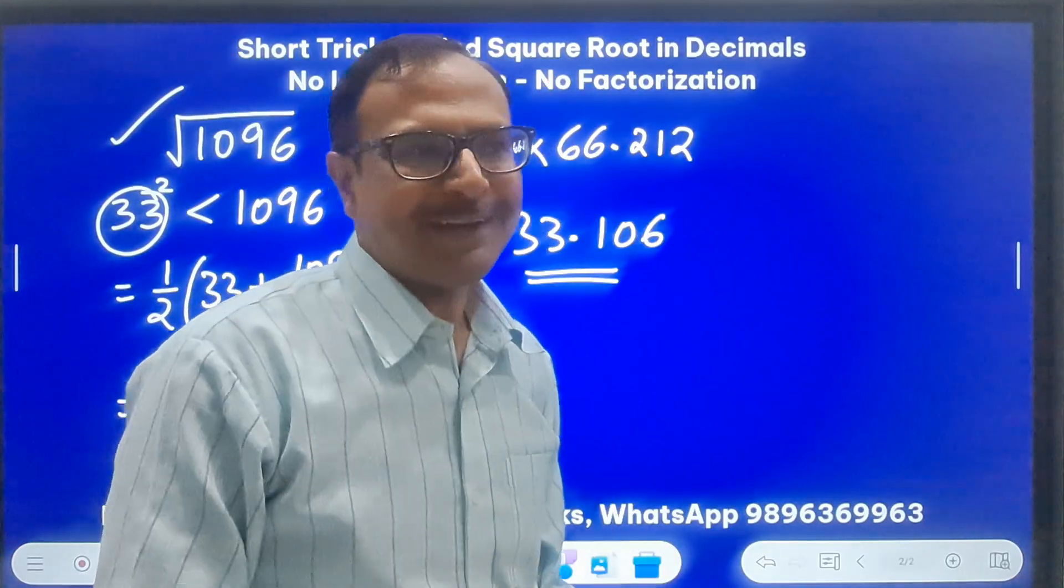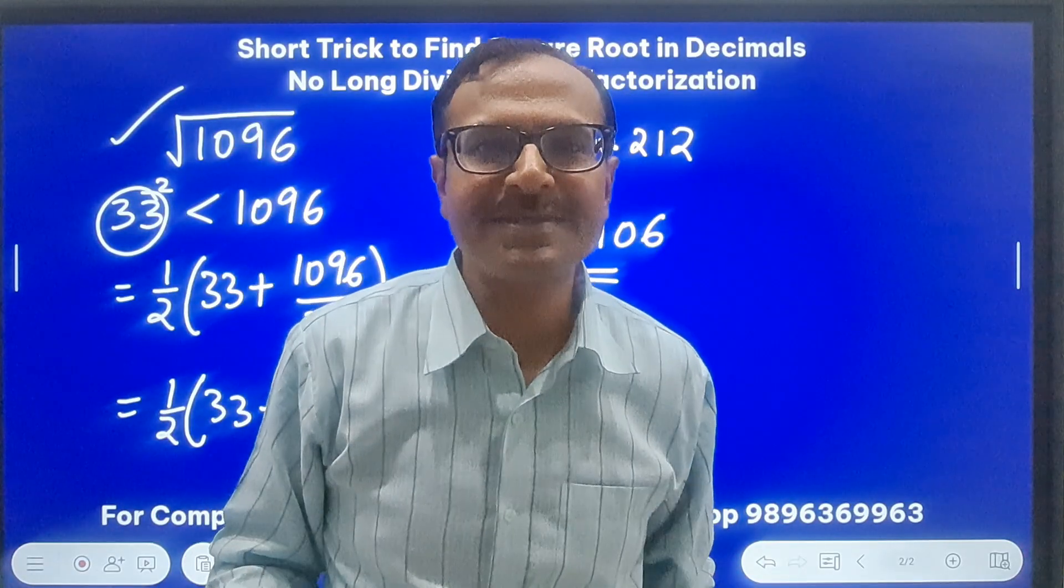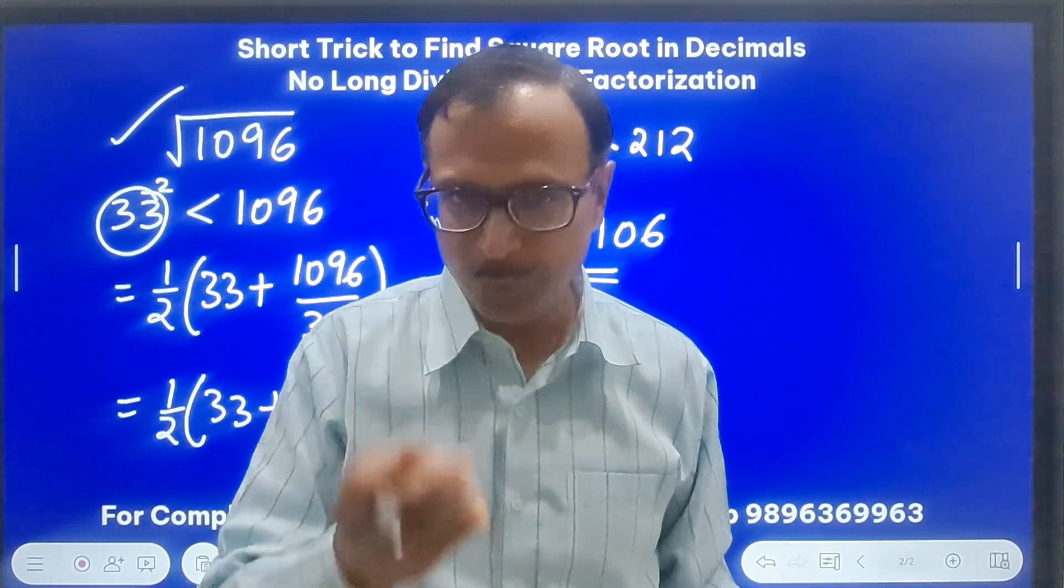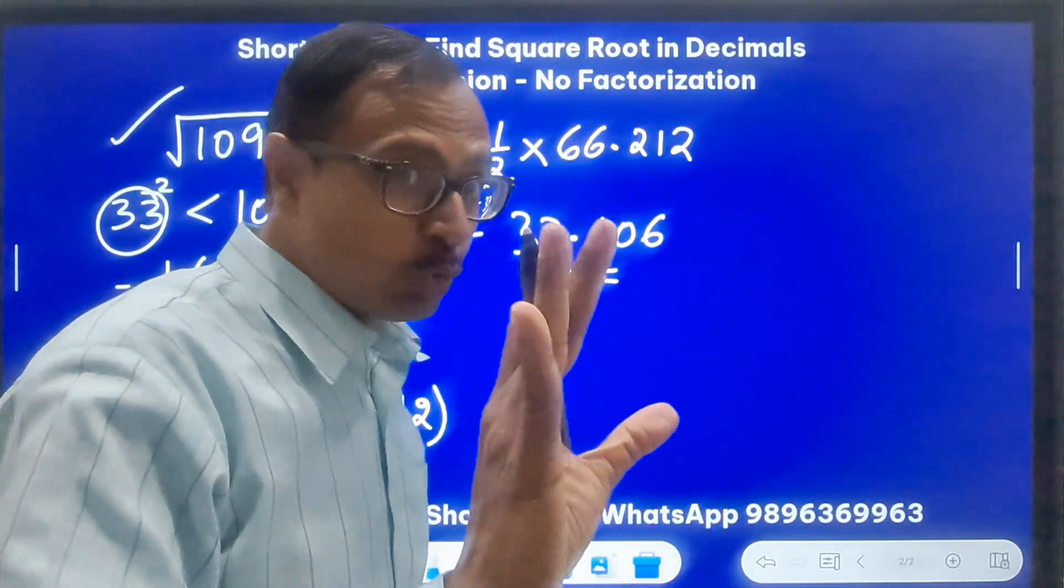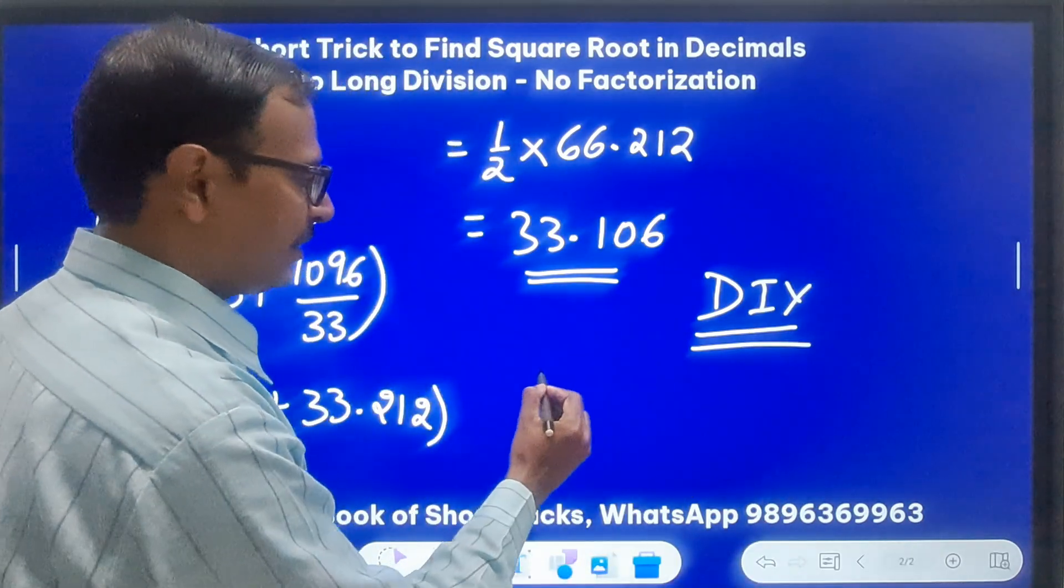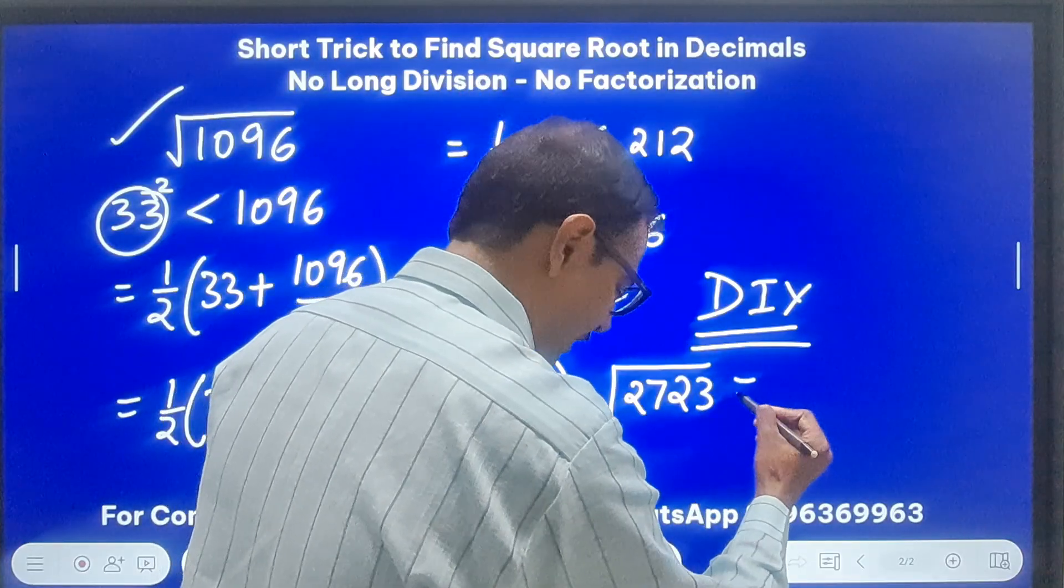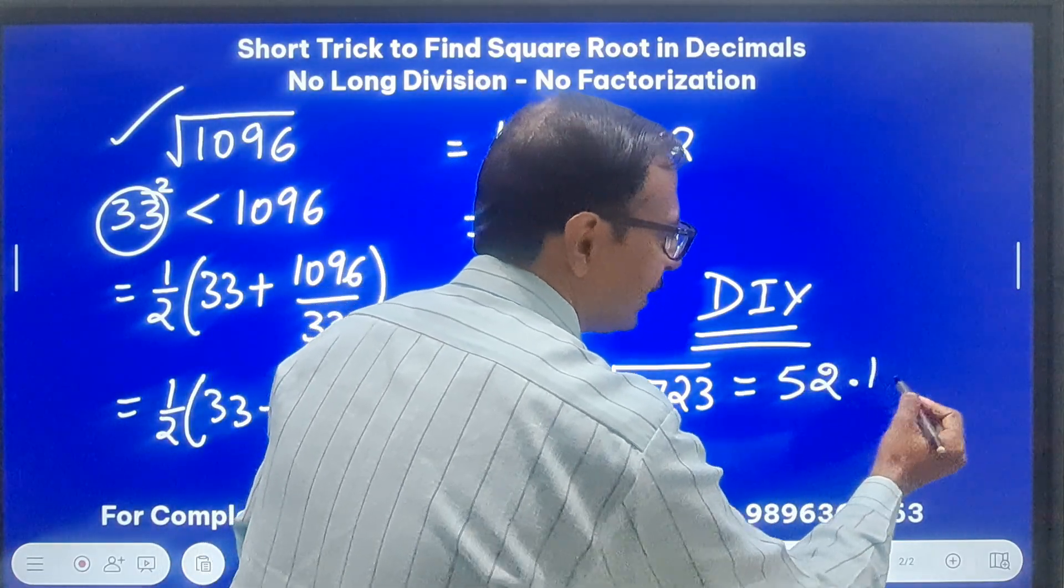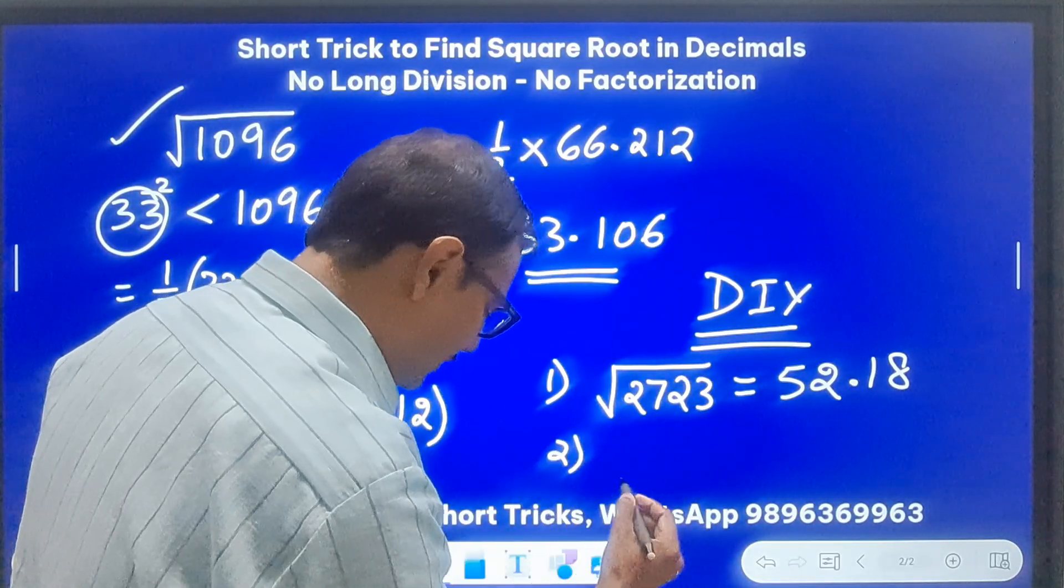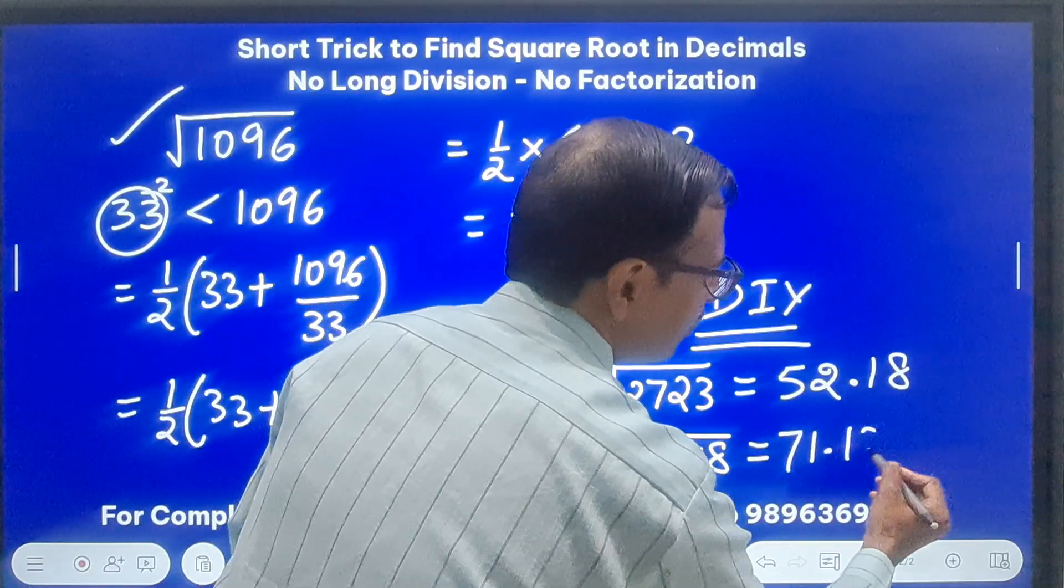So I can go on and on, I can show you any number of examples, but unless and until you put in the practice hours, this is not going to work that easy. Looks very easy when somebody else is doing it. So you do it and let me know in the comments here. And I'll give you two questions. This is DIY, do it yourself. Try the first question which is square root of 2723, and you should get your approximate answer as 52.18. So I already told you the value of A, small value, 52. And one more, just try doing square root of 5058 and try to get this answer as 71.12. Now these are two DIY questions, do it yourself questions.